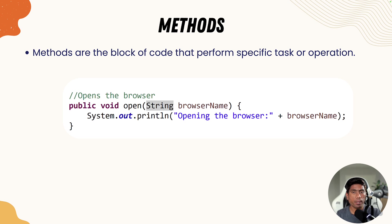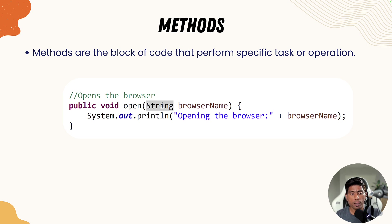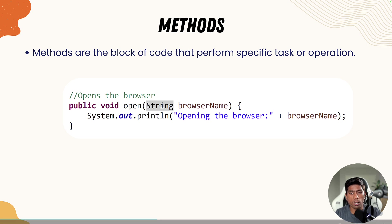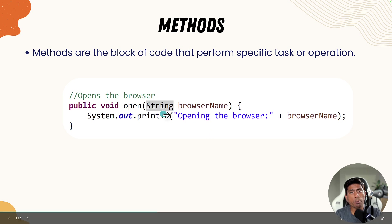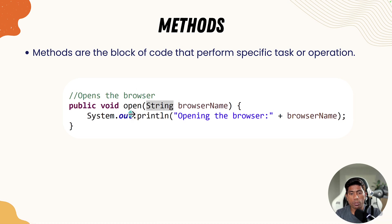You already know that a method performs certain operations specific to a particular functionality. A method is a block of code that performs a certain specific task or operation. For instance, in our last lecture we saw in the WebDriver class we wrote this open method, which has a string parameter and certain other elements.